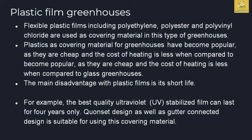Plastic film greenhouses use polyethylene, polyester, polyverine, and chloride materials. These are very cheap compared to glass. The cost of heating will be less than glass greenhouses. The main disadvantage of plastic films is that they have a very short life. For example, a best-quality UV stabilizer film lasts about 4 years, while glass lasts 20 to 30 years. This is a major disadvantage of plastic frames.